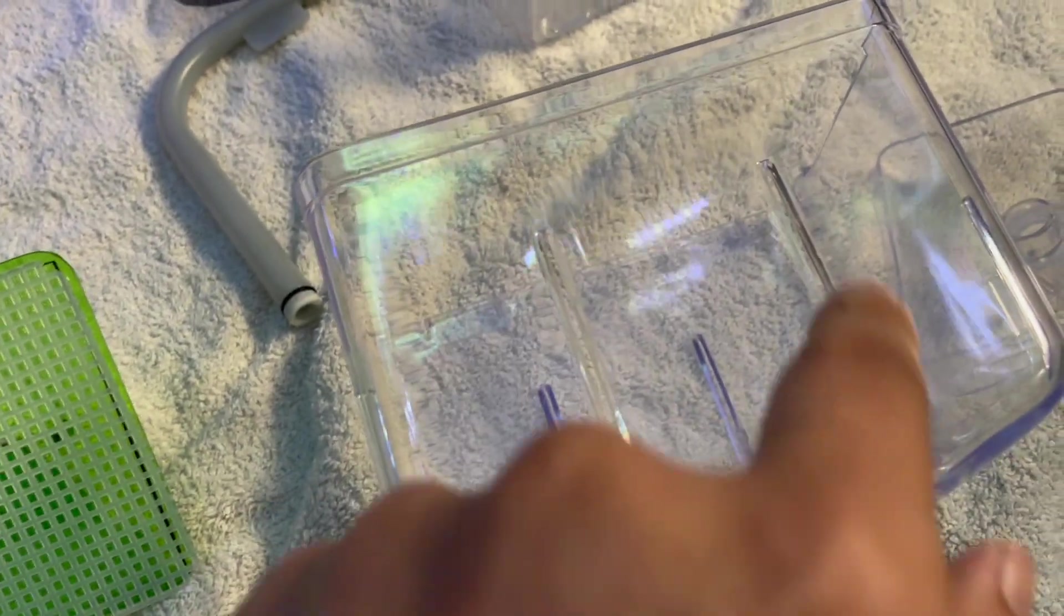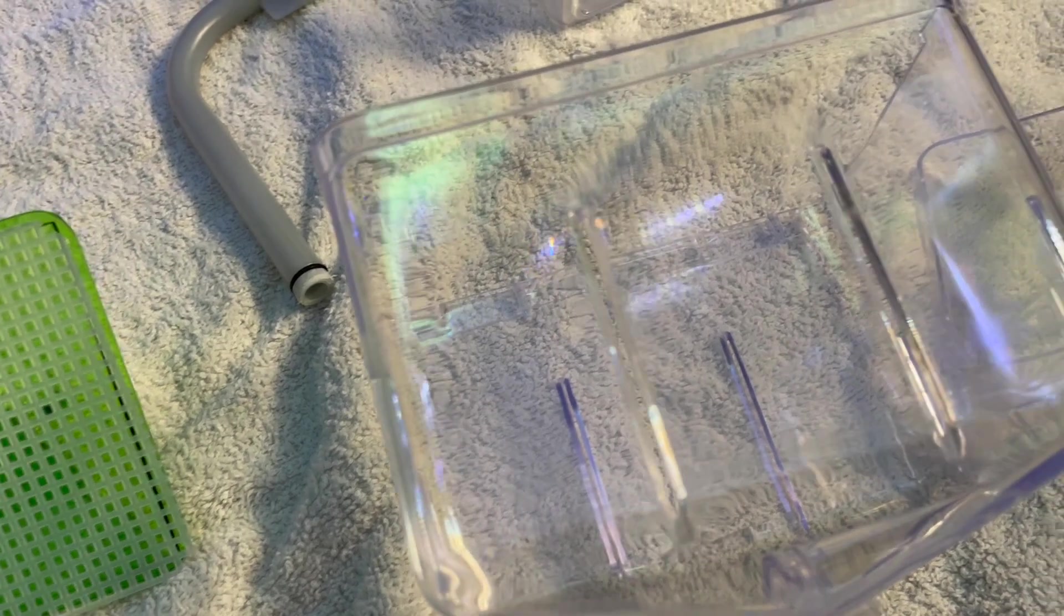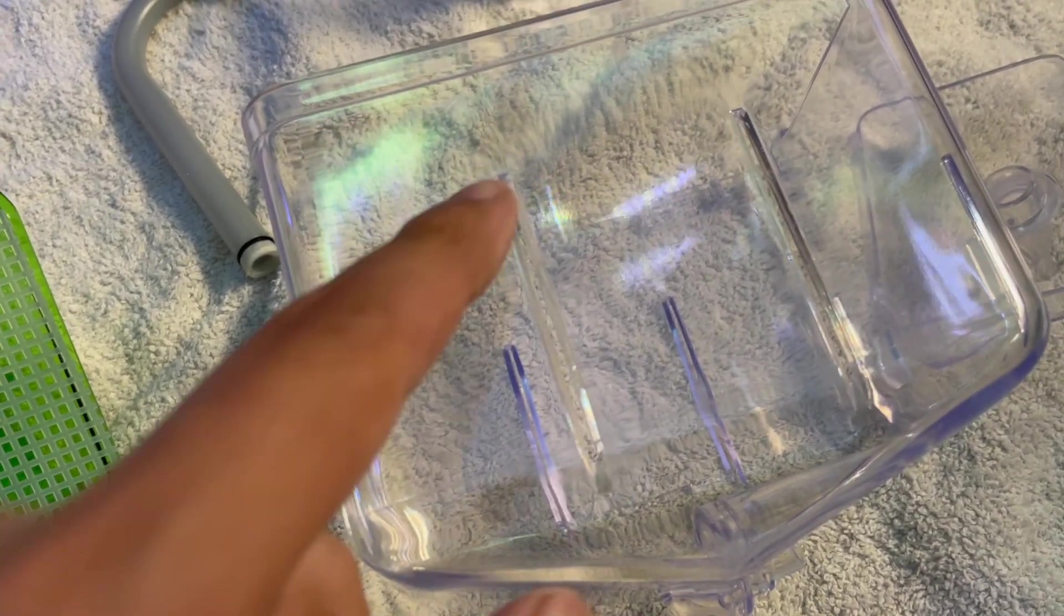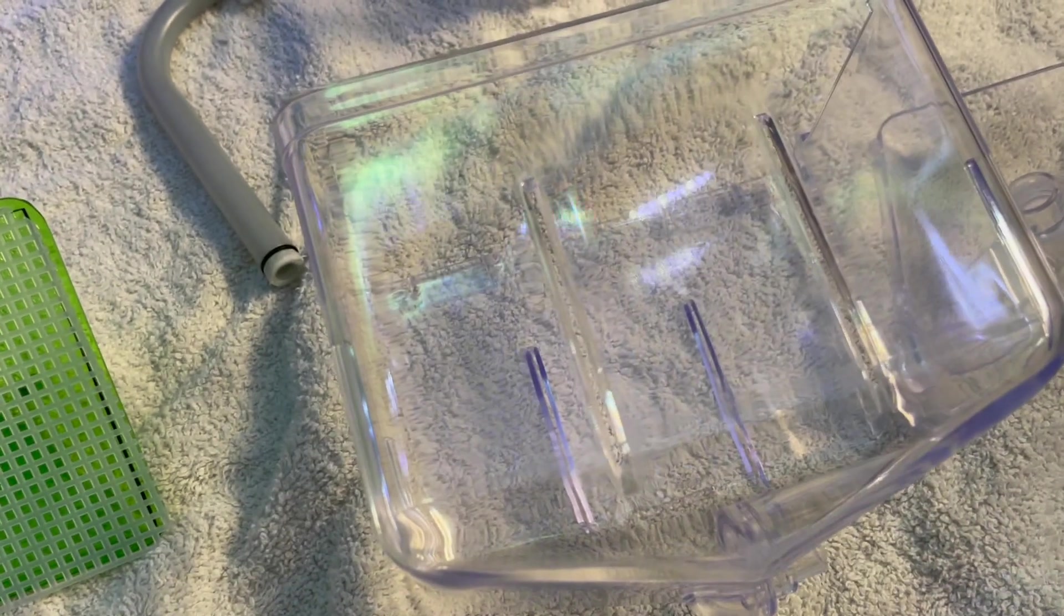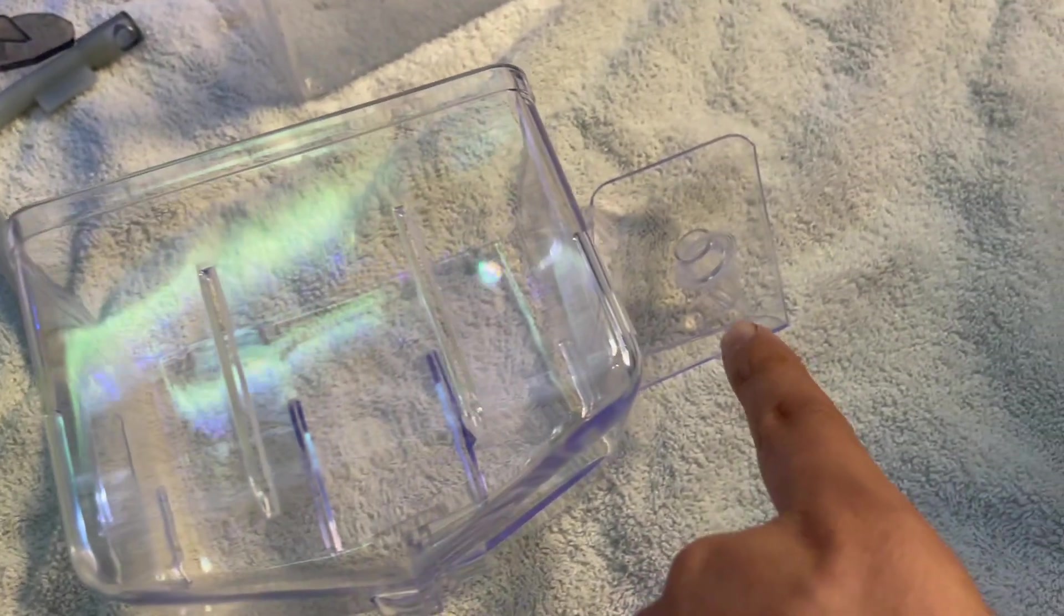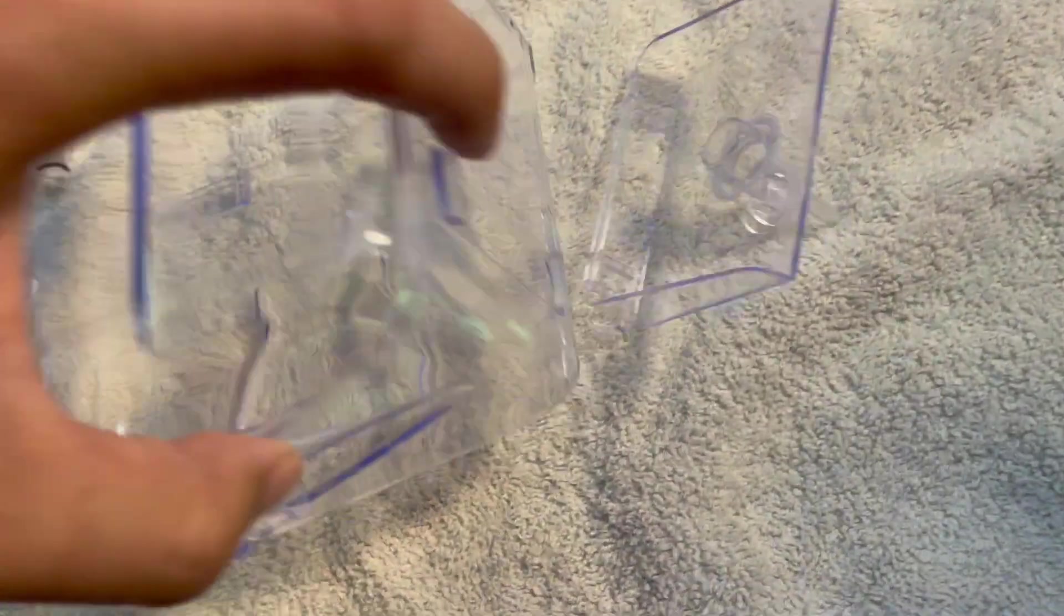For me, I did not glue anything down. I just simply placed this mesh on top and then a couple of pebbles to keep it down, and then I put in the Subwassertang right on top of it and it worked fine for me. I didn't seal any of the holes either. You can if you want to make sure a hundred percent of your fry make it through.